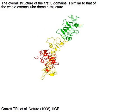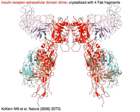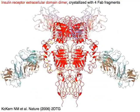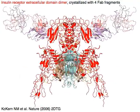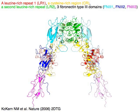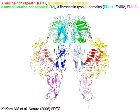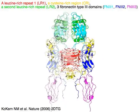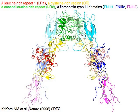The insulin receptor extracellular domain dimer in red is crystallized with four Fab fragments. A leucine-rich repeat LR1 in red, a cysteine-rich region CR in yellow, and a second leucine-rich repeat LR2 in green are followed by three fibronectin type 3 domains: FN31 in cyan, FN32 in blue, and FN33 in magenta.